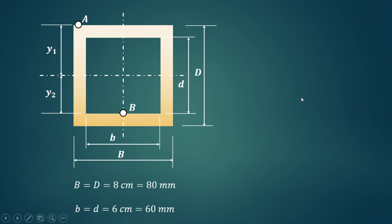The outer width and outer depth of the hollow square section are both 80 mm (8 cm converted). The inner width and inner depth are both 60 mm (6 cm converted).